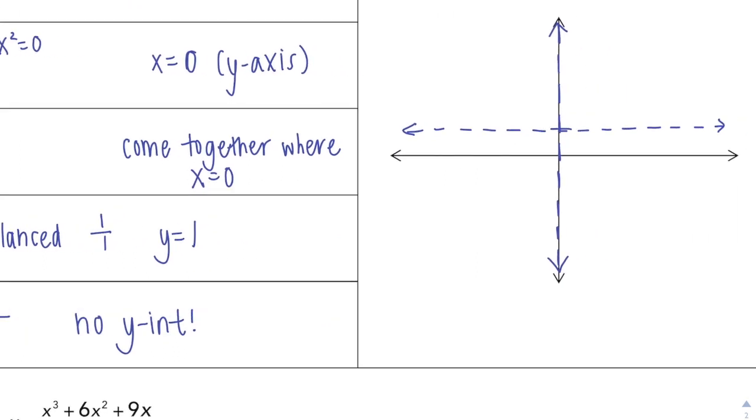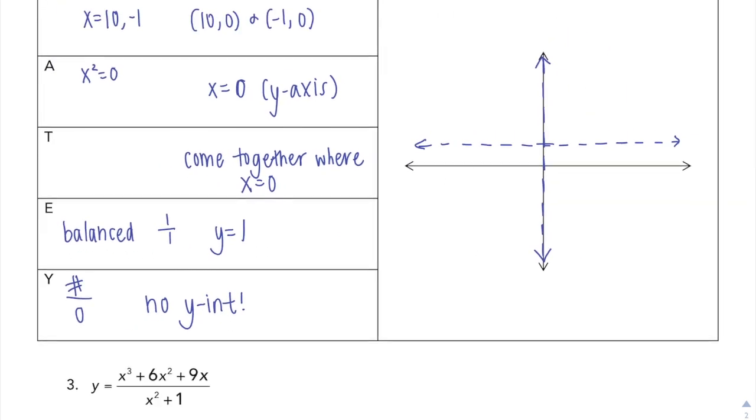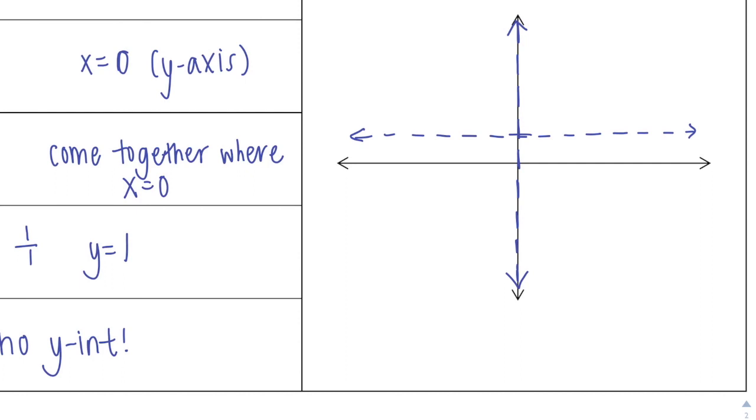So when I go to graph this, I know I have an x-intercept at negative 1. I know I have an x-intercept at 10, so 10 would be all the way over here. And then my graphs are going to come together. So it means right here, they can't go up and come together because then they're going to cross. So they have to go down and come together because they come together where x is 0, which is that line right there.